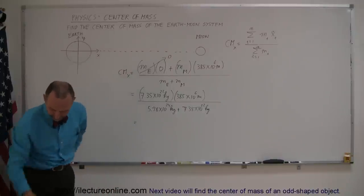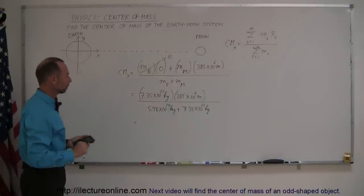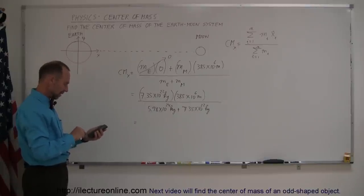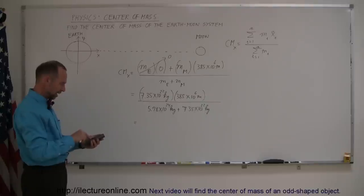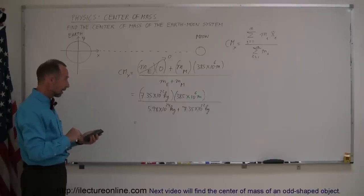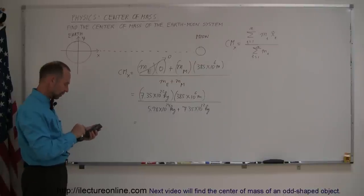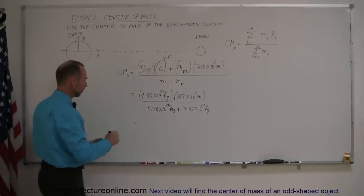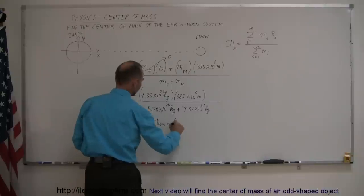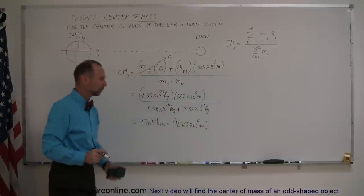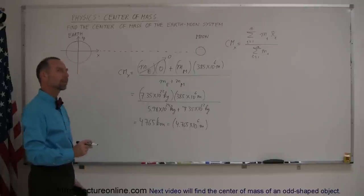Now we're going to need a calculator — there it is. Let's put the denominator together: 5.98×10²⁴ plus 7.35×10²² equals — that's our denominator. Take the inverse of that, multiply times the mass of the Moon, then multiply times the distance to the Moon. The result is 4,765 kilometers, which is equal to 4.765×10⁶ meters.